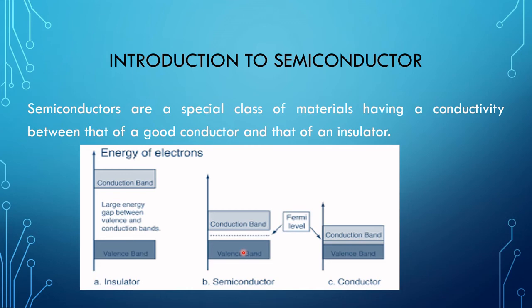The electrical conductivity of a semiconductor is less than that of a metal but greater than that of an insulator. The range of energies possessed by the valence electrons is known as the valence band, and the range of energies possessed by conduction electrons is known as the conduction band. So these are the energy bands of metal, insulator, and semiconductor.